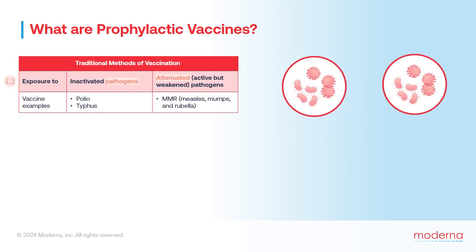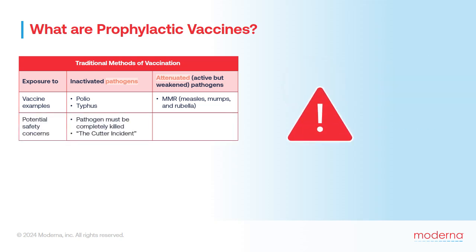Until very recently, the traditional method of vaccination was to expose the recipient to a small amount of a pathogen that's been inactivated, or an active but weakened — that is, attenuated — pathogen. Pathogens may be viruses or bacteria. The polio and typhus vaccines are good examples of inactivated pathogen vaccines, while the MMR vaccine — measles, mumps, and rubella — is an example of an attenuated pathogen vaccine. The safety of an inactivated pathogen vaccine depends on the pathogen being thoroughly inactivated or killed prior to administration.